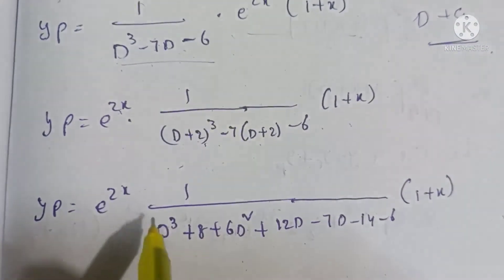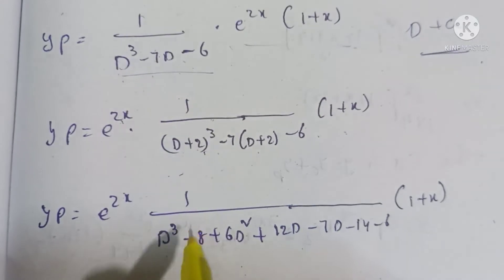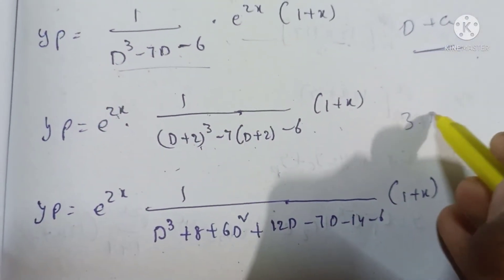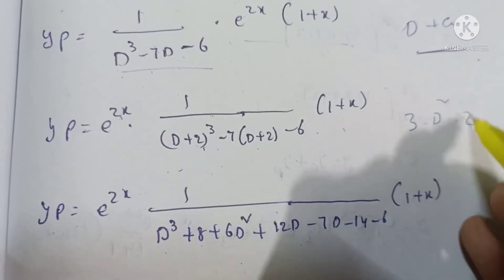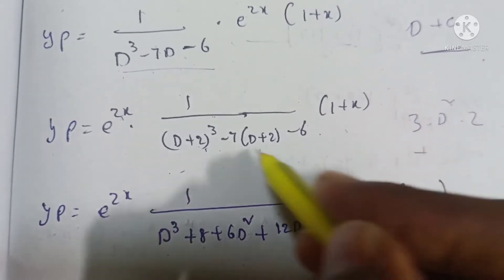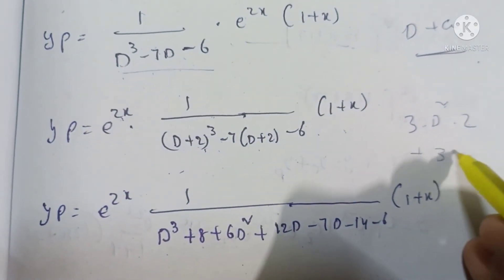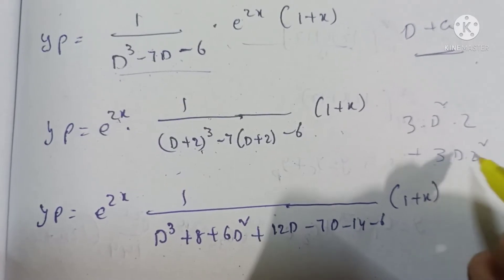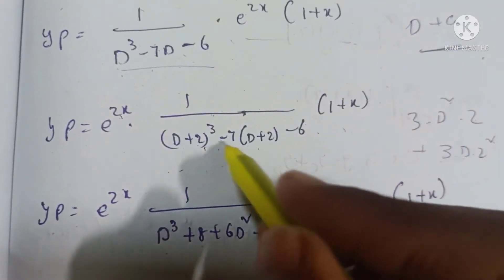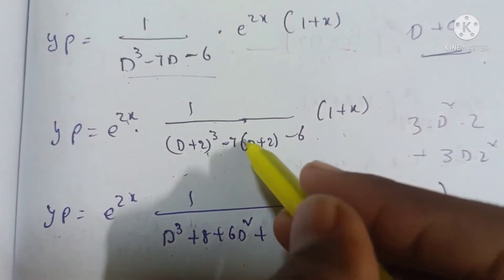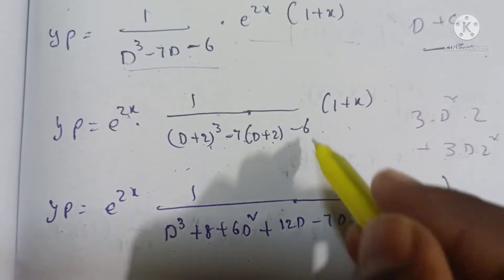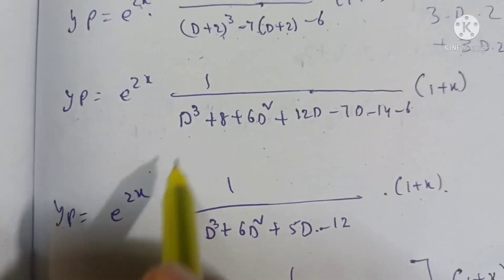Expanding (a + b)³ = a³ + b³ + 3a²b + 3ab². So D³ + 8 + 3D²(2) gives 6D², then 3D(2²) = 3D(4) = 12D. Next, -7(D) = -7D, and -7(2) = -14, then -6.